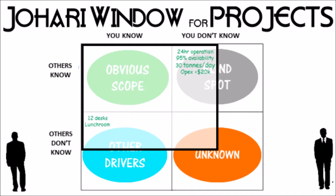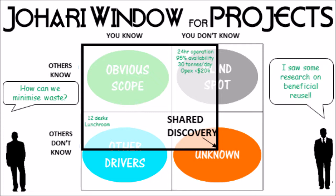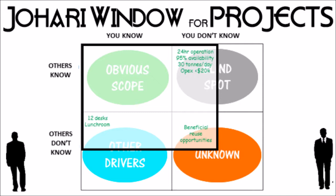The third item is shared discovery, which is pretty self-explanatory in a project context. You might work together to address unknown things — it might be a design basis that's not properly fleshed out, investigations that need to be done, or research through papers. You can do that together or develop a program to address the known unknowns.